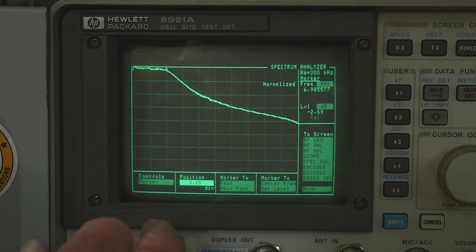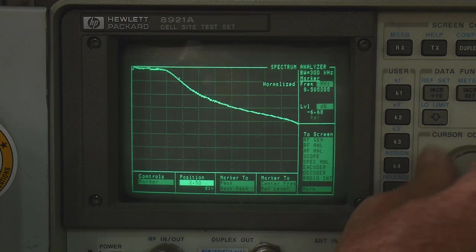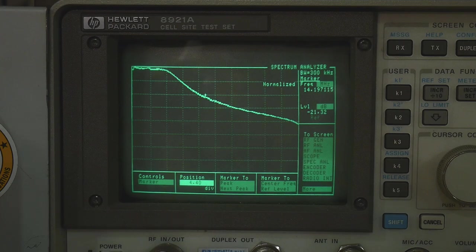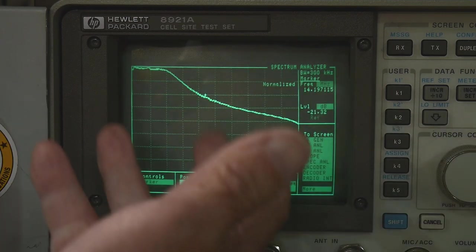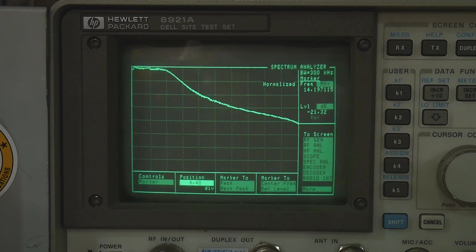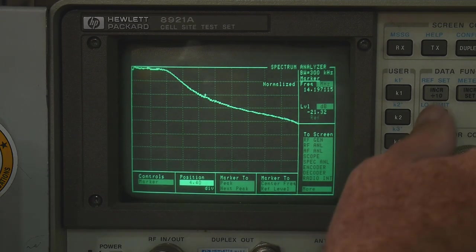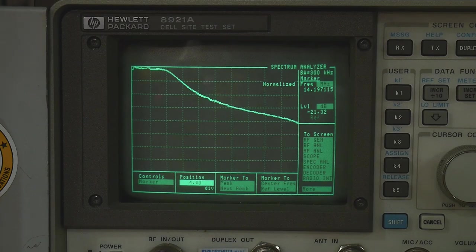So at 14 MHz, let's measure that. At 14 MHz, it's down by 21 dB. So we'll call it a 20 dB filter, 21 dB filter. So let's go back and let's take a look at that drawing again.